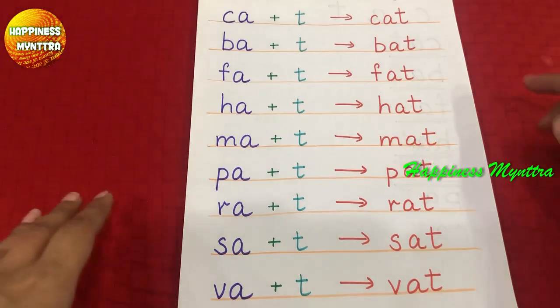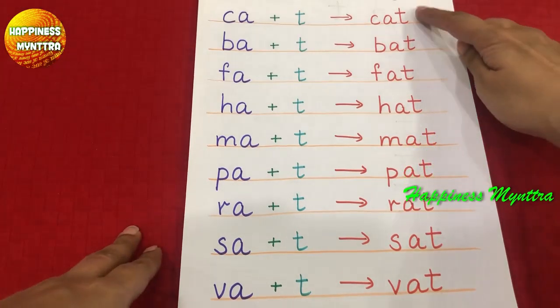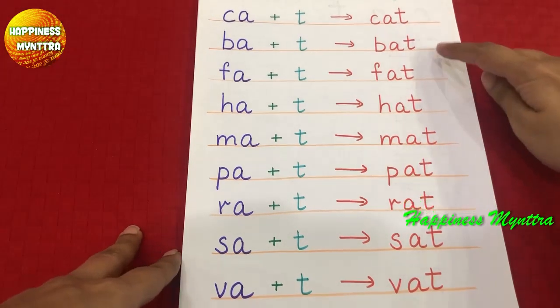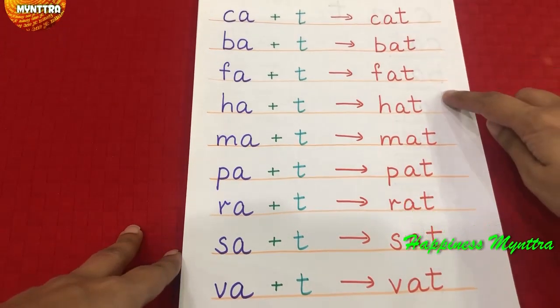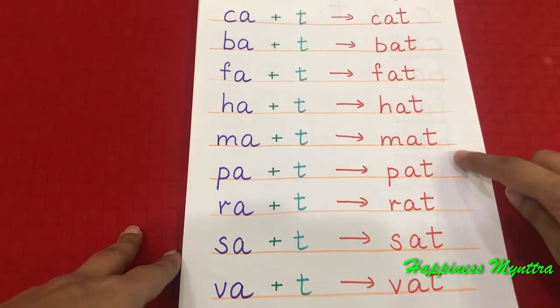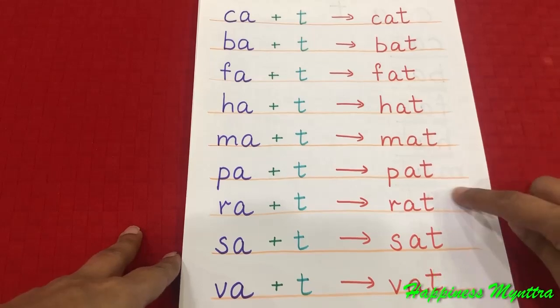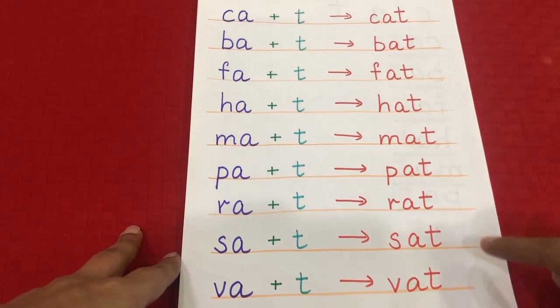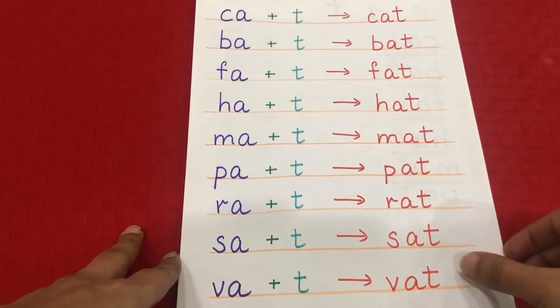So we'll start with the simplest, which is the AT family: cat, bat, fat, hat, mat, pat, rat, sat, vat.